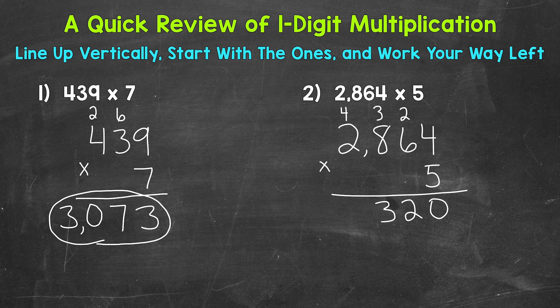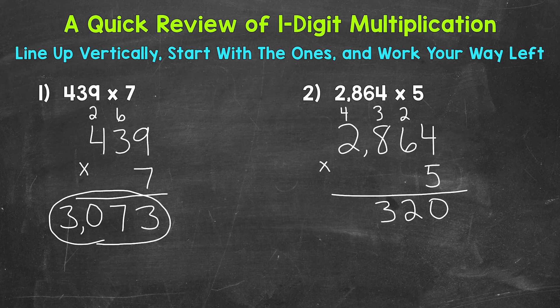And then lastly, we have the thousands, where we have a 2. So 5 times 2 is 10, plus that carried 4 is 14.